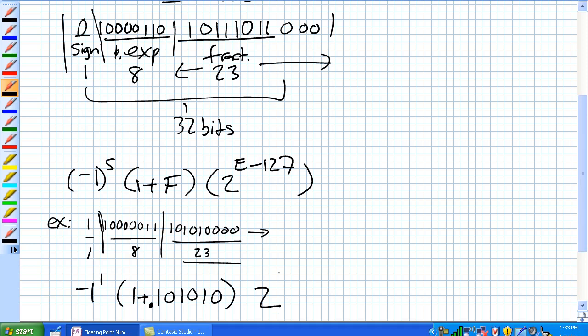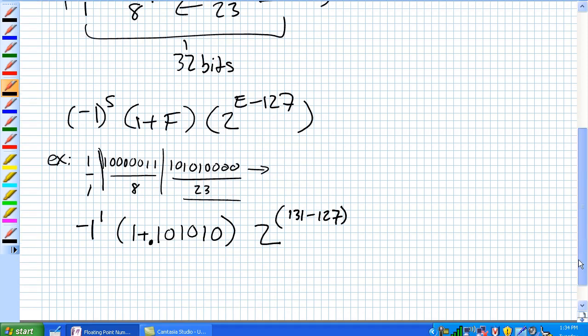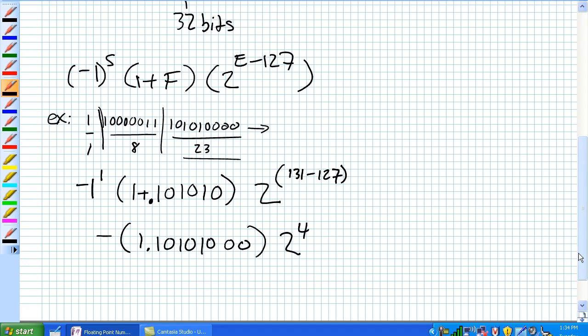Times 2, and our biased exponent, right there, is 10000011, and if you go ahead and do the binary to decimal conversion, you'll find out that it's 131. Got to get rid of the biasing, minus 127. So what are you going to get here? It's going to be negative 1.101010 zeros, and that's going to be 2 to the 4, in this case.